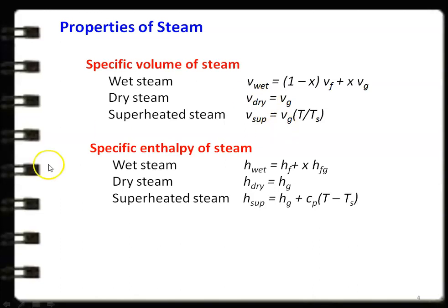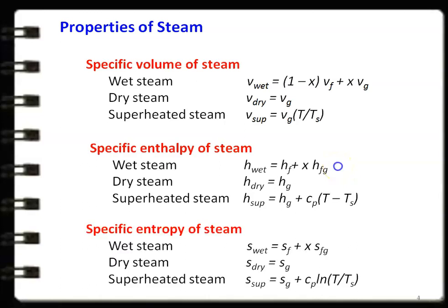Hf is the specific enthalpy of water and Hfg is the specific enthalpy of evaporation. The specific entropy of wet steam: S_wet = Sf + x·Sfg. Entropy of dry steam = Sg. And entropy of superheated steam = Sg + Cp·ln(T/Ts). All parameters — Vg, Hf, Hfg, saturation temperature, Hg, Sf, Sfg, Sg — can be taken from the steam table depending on the temperature or pressure.